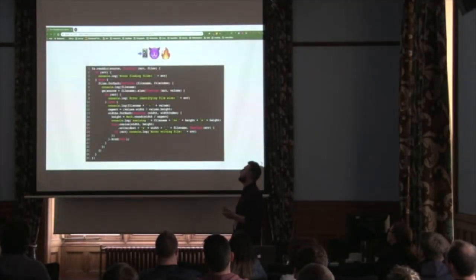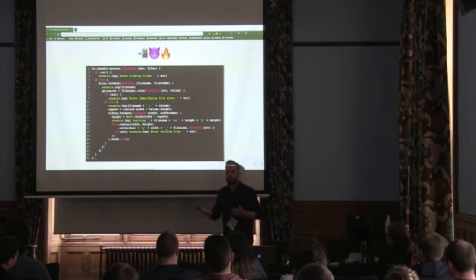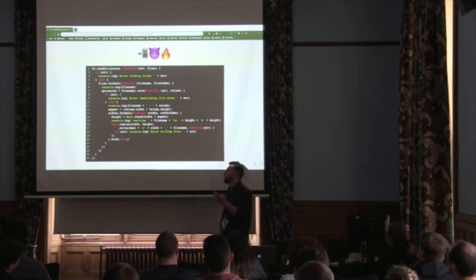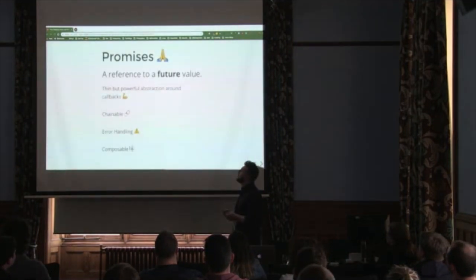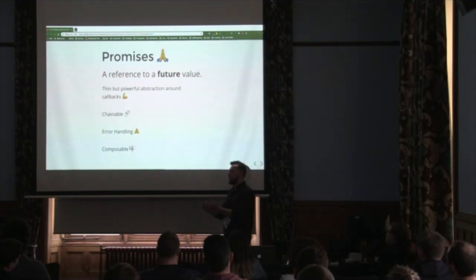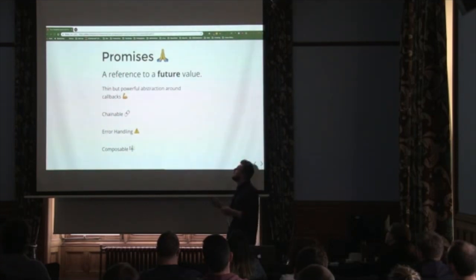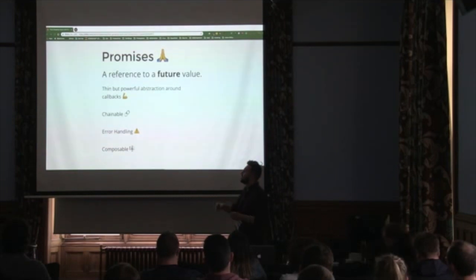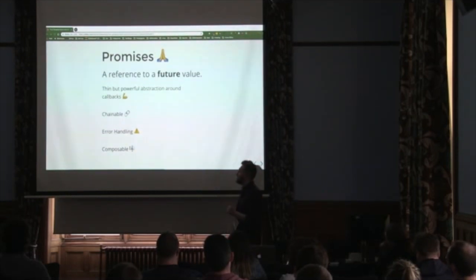Callbacks are great and have got us pretty far, but people started to realize you ended up quickly with deeply nested code — callback hell — a nightmare to maintain and read. This is when promises were introduced. The difference is a callback is just a thing you define to say run this when finished, but a promise lets us hold on to a reference of a future value in JavaScript. It's a bridge between the JavaScript runtime and the browser APIs. Promises are chainable with .then, .then, .then, saving us from callback hell. We have nice error handling that catches errors through the whole chain, and they're composable because we have a reference to the future value.